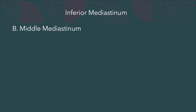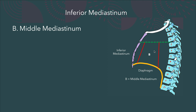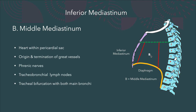Going to the middle mediastinum — this is the location where the heart and its coverings are. It contains the heart with its pericardial sac, the origin and termination of the great vessels, the phrenic nerve, tracheobronchial lymph nodes, and the tracheal bifurcation with both main bronchi — right and left.